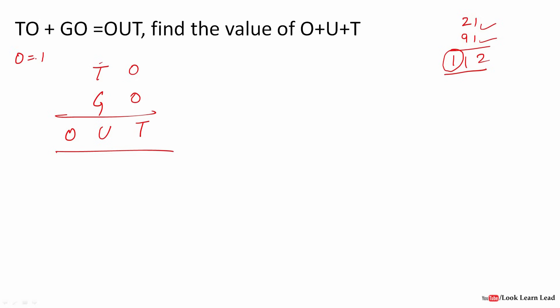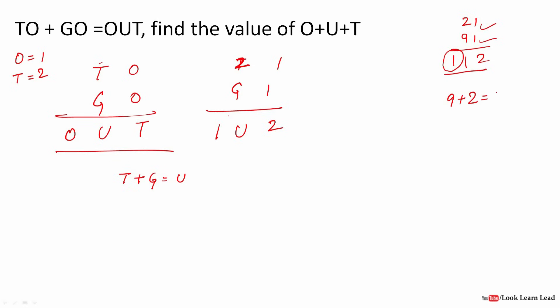Since O = 1, we substitute: T1 + G1 = 1UT. Now T is the leftmost digit of the result, so T = 1 + 1 = 2, giving T = 2. Looking at the tens column, T + G = U, but since a carry is generated, we write it as T + G = U + 10. Substituting T = 2: 2 + G = U + 10.